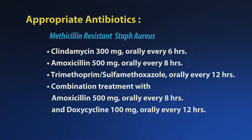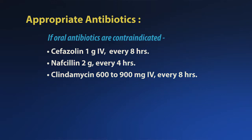If someone is at additional risk for methicillin-resistant staph aureus, consider clindamycin 300 mg orally every six hours, amoxicillin-clavulanate 500 mg orally every eight hours, trimethoprim-sulfamethoxazole orally every 12 hours, or combination treatment with amoxicillin-clavulanate 500 mg orally every eight hours and doxycycline 100 mg orally every 12 hours. It is important to note that clindamycin should be reserved for people who are penicillin or cephalosporin allergic. If oral antibiotics are contraindicated, then cefazolin 1 gram IV every eight hours, nafcillin 2 grams every four hours, or clindamycin 600 to 900 mg every eight hours intravenously could be administered.